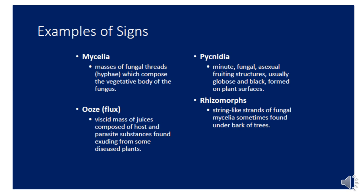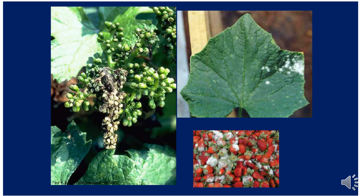This slide shows some examples of signs. On the top right of the slide, you can see white mycelium growth caused by the famous disease called powdery mildew. On the bottom right of the slide, you can see mycelium growth on the fruits of strawberry, caused by a fungus called gray mold. On the left of the slide, you can see gray mycelium growth on grape, also caused by gray mold. This is a sign of infection — physical evidence of the pathogen visible directly on the infected plant.